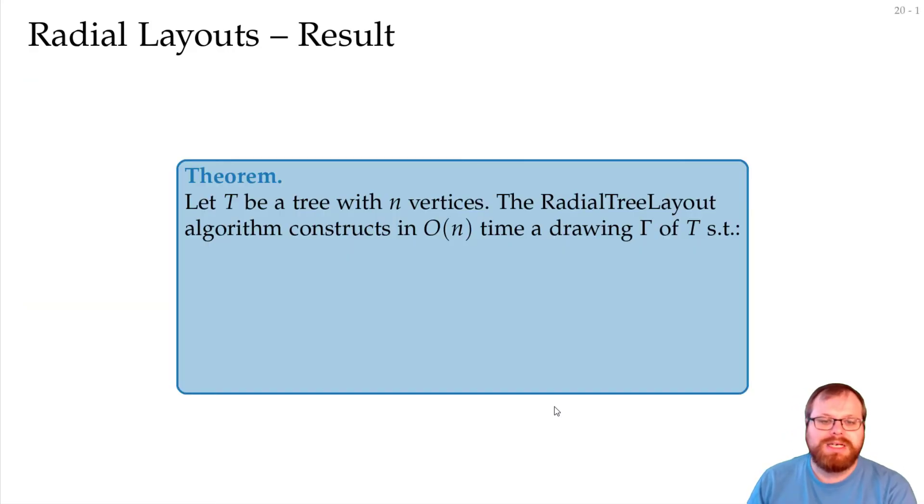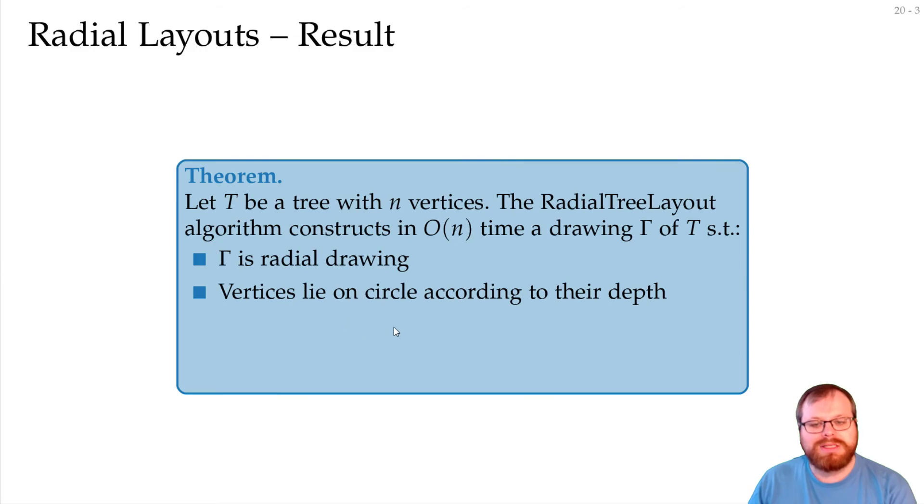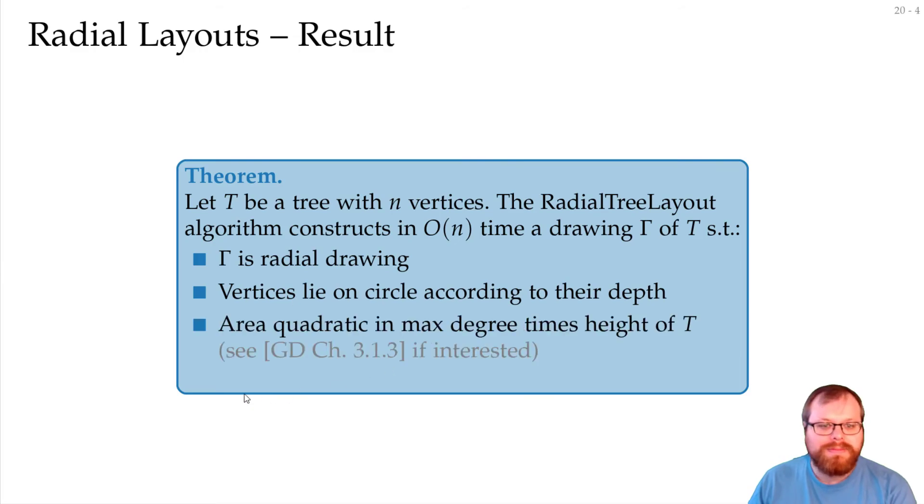Let's formulate the result. We have a tree with n vertices. Then the radial tree layout algorithm constructs in linear time a drawing such that we get a radial drawing. The vertices lie in circles according to the depth. And the area is quadratic in the maximum degree times the height of T. So you take the height of the tree, which is just the longest root leaf path. You multiply it with maximum degree of a vertex and then you square the whole thing. Then you get the area.